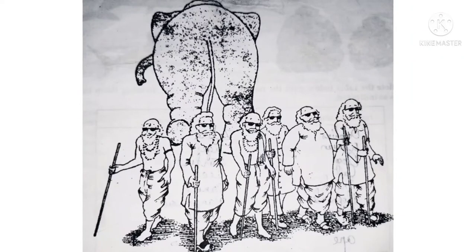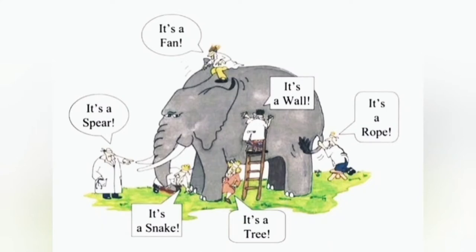Let us see what they say about the elephant after touching it. The first man touched the side of the elephant and said it is like a wall. The second man touched the tusk and said it is round, smooth and sharp, just like a spear. The third man touched the trunk and said it is like a snake.